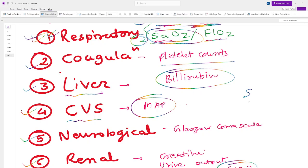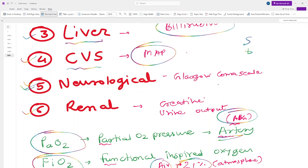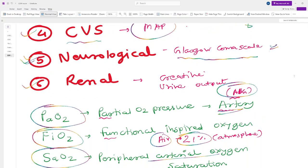Then comes the neurological system - the Glasgow Coma Scale, which is another very important tool to assess the neurological function, is used here.